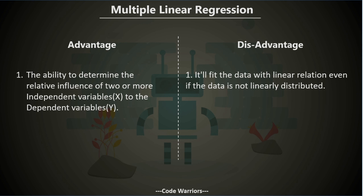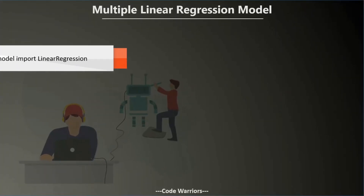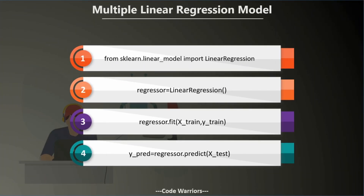Using scikit-learn to create a multiple linear regression model, all you need to do is write four lines of code. First, import the LinearRegression class from sklearn.linear_model. Then create an object of LinearRegression. Next, perform training using regressor.fit(), passing your independent variables and dependent variable. For prediction, use regressor.predict() with the testing data, and the predictions will be stored in y_pred.